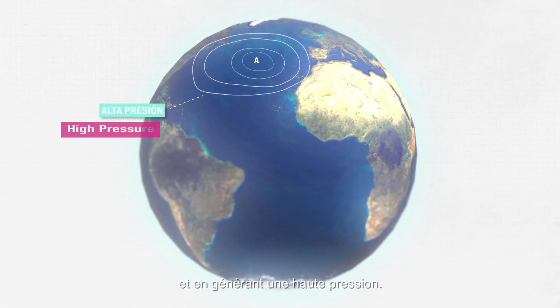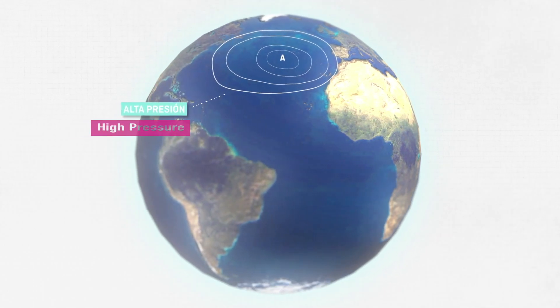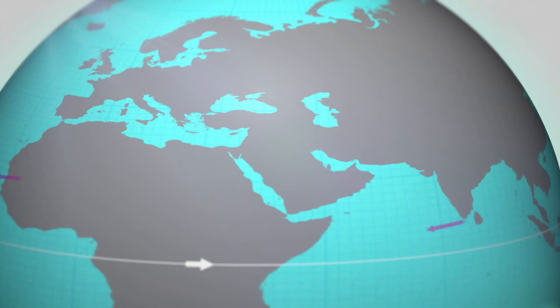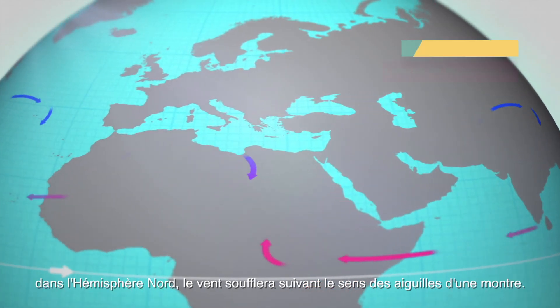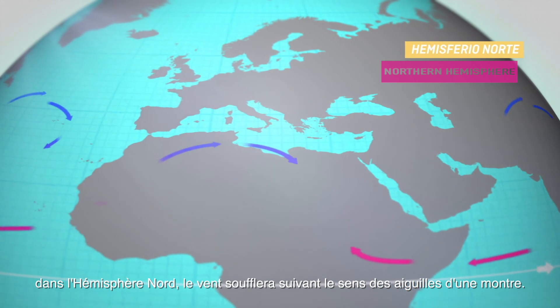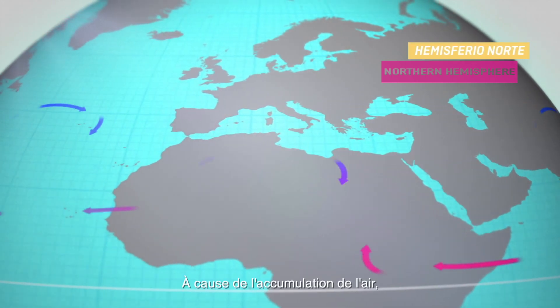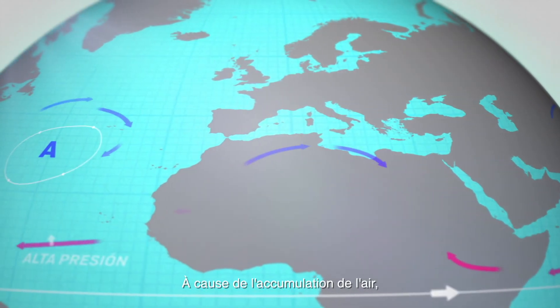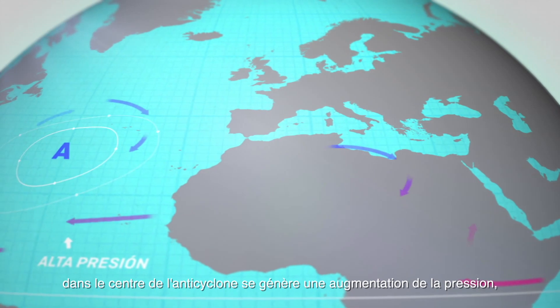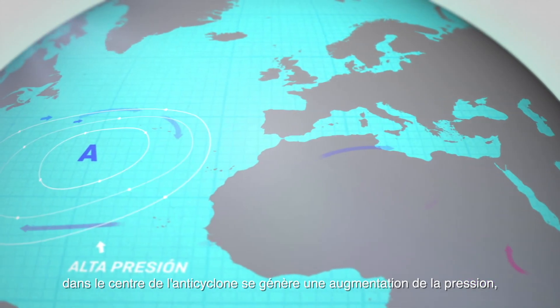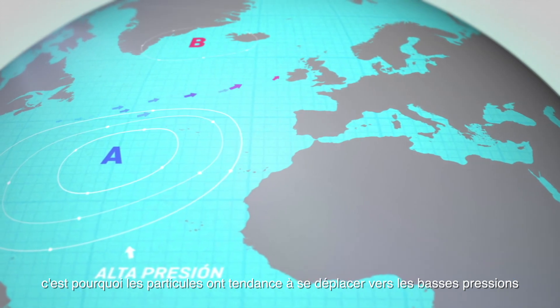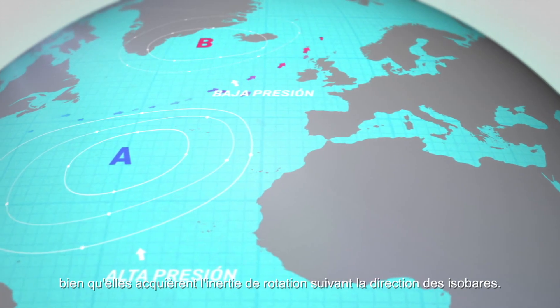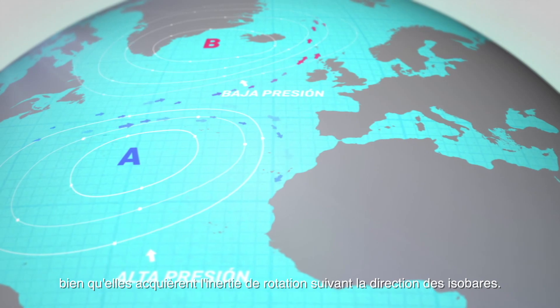Generally, high pressure forms. As a consequence of the Earth's rotation, in the northern hemisphere the wind will blow clockwise in anticyclones. Due to the accumulation of air, pressure increases in the center of the anticyclone, so the air particles tend to travel down toward low pressure, though they gain turning inertia along the isobars.